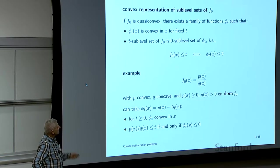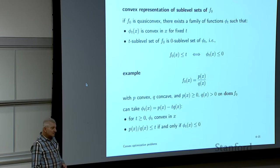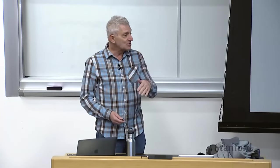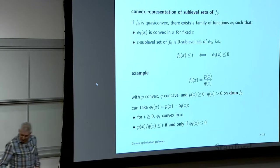This allows you to check whether there exists an x for which f₀(x) < T by solving a convex feasibility problem. Then you can do bisection: ask whether f₀(x) < 1.5, and if yes, you have a feasible point with objective value 1.5 or better. Then try 1, 0.5, and so on. That's bisection, and it actually works.